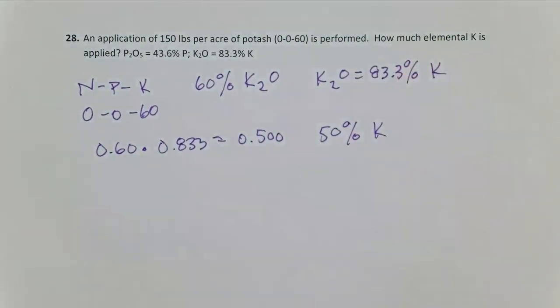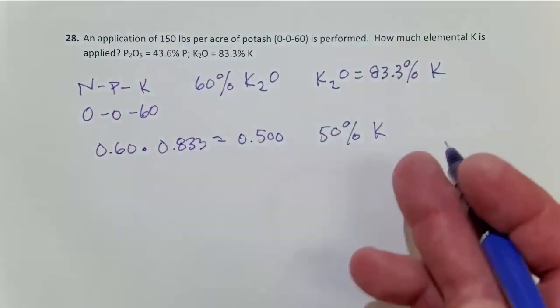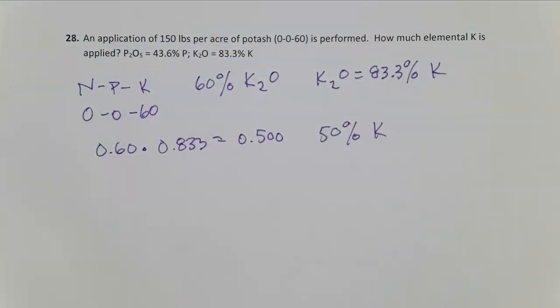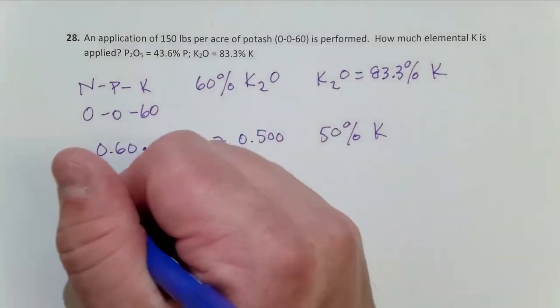So this potash is actually 50% K. That could make the math really easy, we could just take half of that because that's 50%, but I'll write it out longhand for you so you can see the whole process.